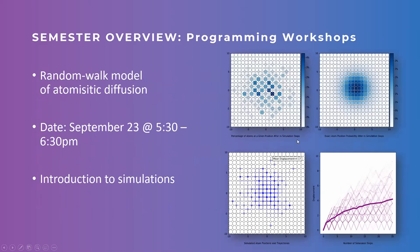The first tutorial is making a random walk model of atomistic diffusion. In our third-year materials science class on mass diffusion, our professor introduced atomistic diffusion. We're going to start from a few basic assumptions about an atom moving in a crystal and do some basic programming to create a model of diffusion. That first tutorial is set for next week at 5:30 — watch our social media for details.